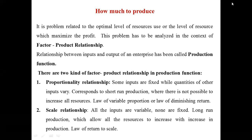The second is scale relationship. When all inputs are available — we have all the resources, all the inputs — we vary their quantities and see that our output is produced at the lowest cost. This basically corresponds to long-run production, which allows all resources to increase with an increase in production.